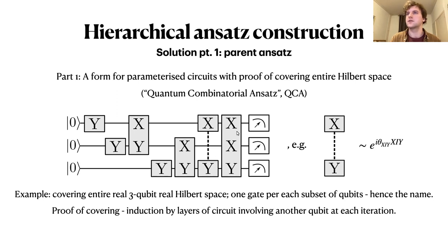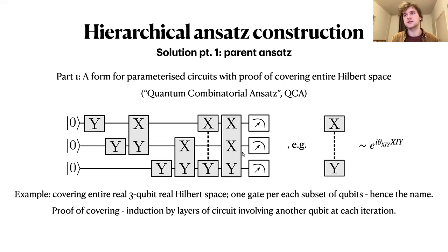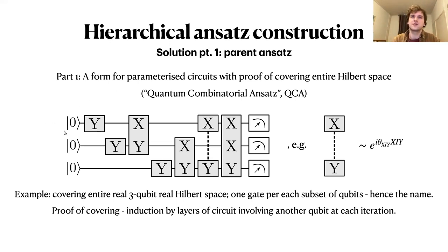The gates use a condensed notation: a box containing letters X and Y corresponds to a rotation generator at some tunable angle theta. Here with seven gates — seven independent parameters, which equals two-to-the-three-minus-one — you cover the entire real three-qubit Hilbert space. The proof works by induction: first showing the one-qubit space is covered, then adding two extra gates to cover two qubits, and so on. This extends to the complex Hilbert space in a similar way.